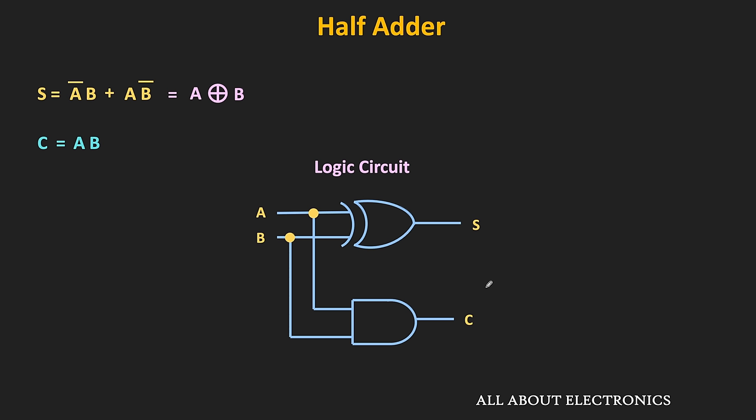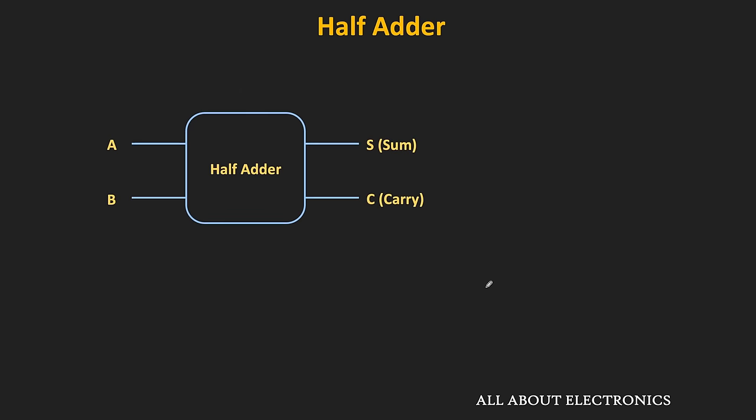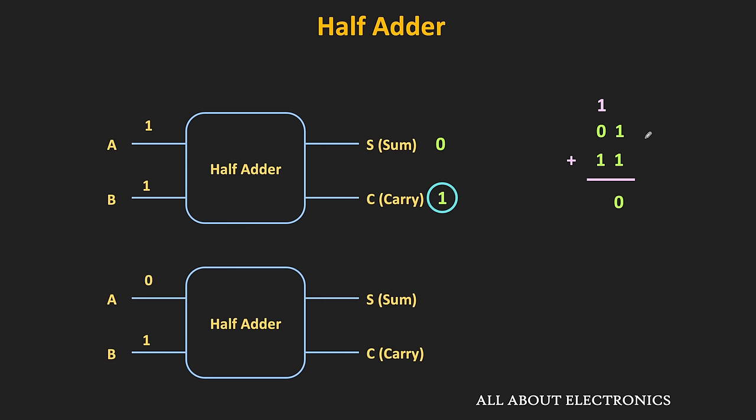This half adder circuit works perfectly when there is no incoming carry. But if there is an incoming carry from the previous addition, we cannot add that carry using this half adder. For example, the LSBs of two binary numbers can be added using the half adder because there is no carry during that addition. But in the next column, we have the carry bit along with the two bits, generated from the previous addition. If we try to do the addition using the half adder, we need to ignore this carry bit — and that is the limitation of the half adder. Using the half adder, we cannot add the carry generated from a previous addition.